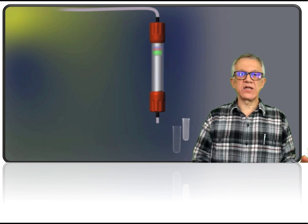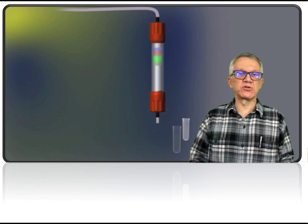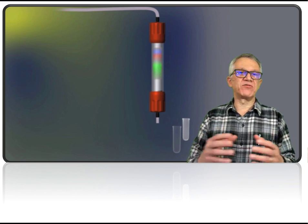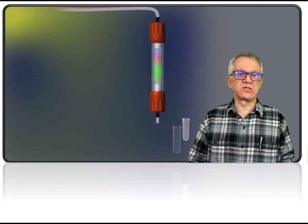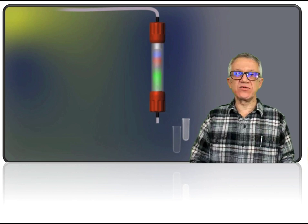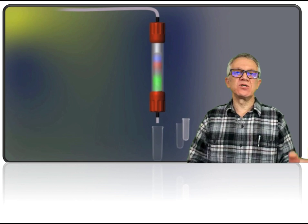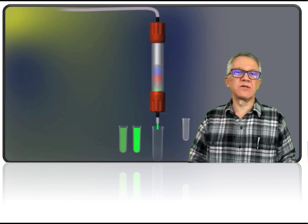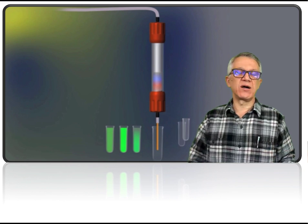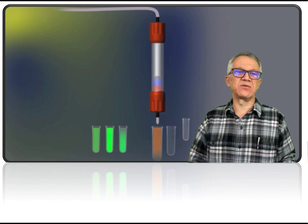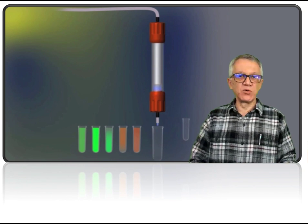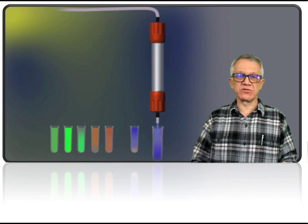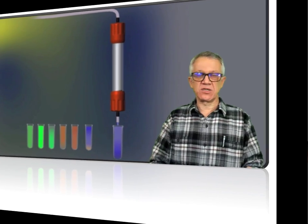In this animation, this principle is illustrated by having compounds of different colors that are being separated. The green compound is not retained, therefore it passes through the column. The orange compound is less retained. And finally, the blue compound is the most retained of all the compounds that have been separated.